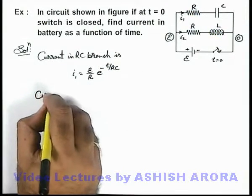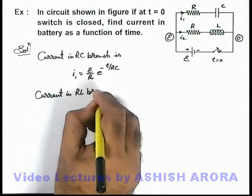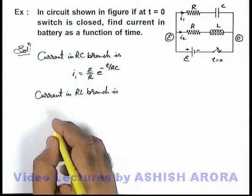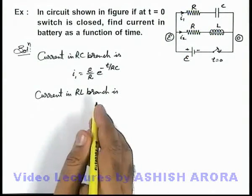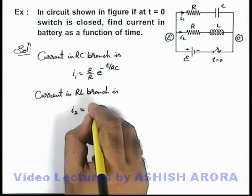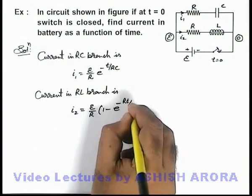Similarly we can write current in RL branch of circuit is: this is the growth of current in an inductor through a resistance we have recently studied in previous sections. This i2 we can write as E by R times 1 minus e to power minus Rt by L.